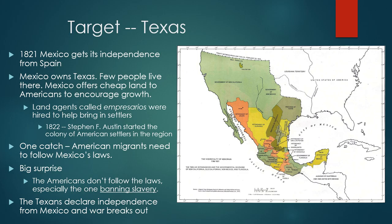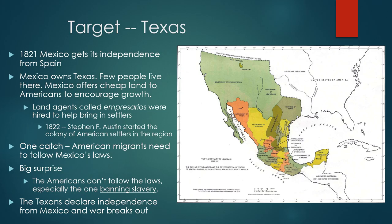For Americans to get this cheap land from Mexico, there was one catch: they needed to follow Mexico's laws. This included converting to the Catholic religion, conducting all business in Spanish, and not practicing slavery, which was illegal in Mexico. Big surprise — the Americans didn't follow any of these laws, especially the one banning slavery. Many Texas settlers brought their slaves because they wanted to set up cotton plantations in eastern Texas. Eventually Texas declared its independence from Mexico as they increasingly differed culturally and politically, and a war broke out between Mexico and the province of Texas.